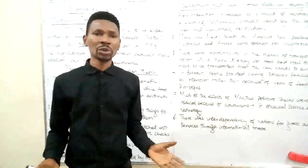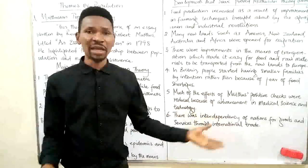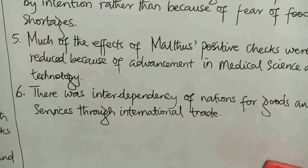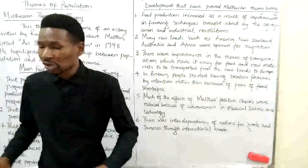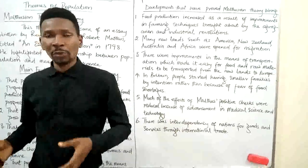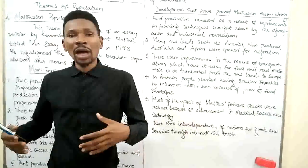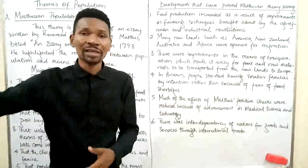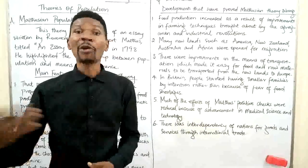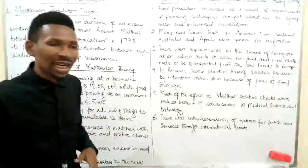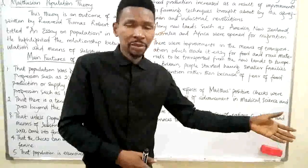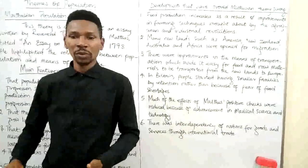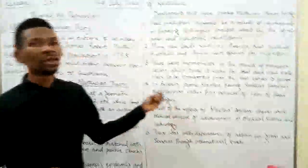There was no need for people to experience wars and pandemics. Number six, there was interdependency of nations for goods and services through international trade. Countries that had surplus food and natural resources could now sell these goods to other countries that were lacking these resources for money. Nations that didn't have could now depend on nations that had excess to buy from them. Just like Nigeria, which has excess crude oil and has made it a major source of sustenance.